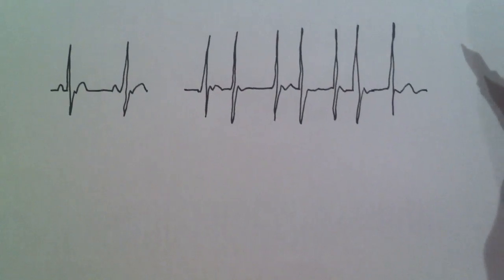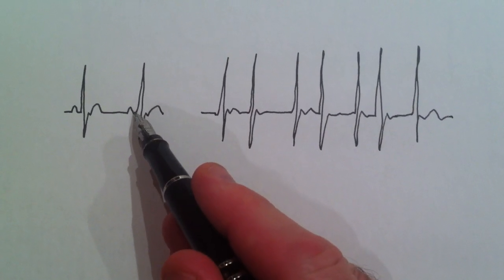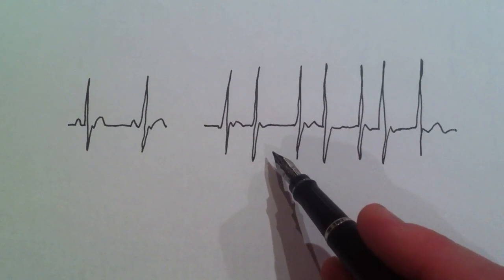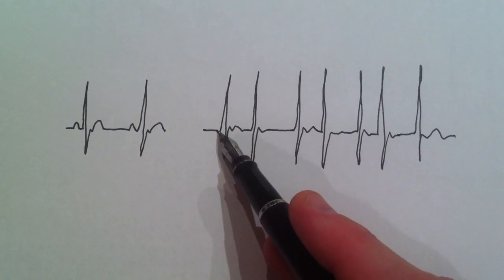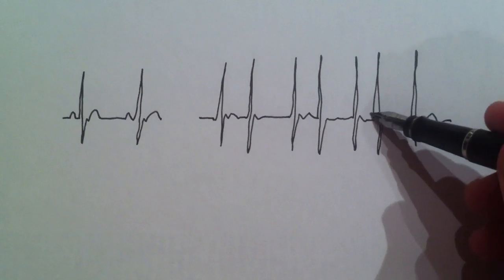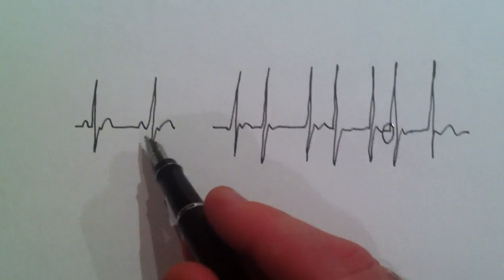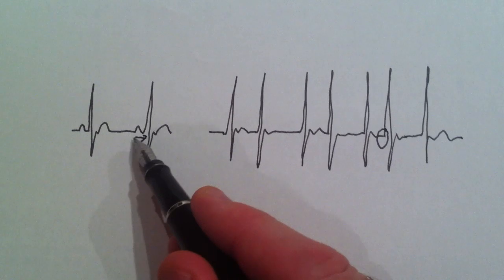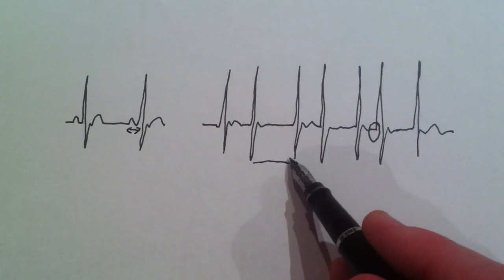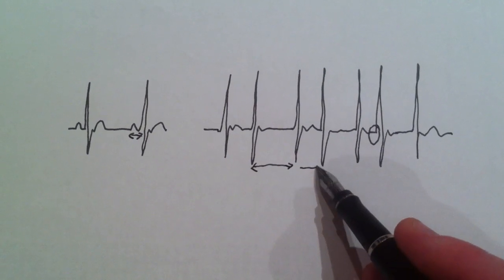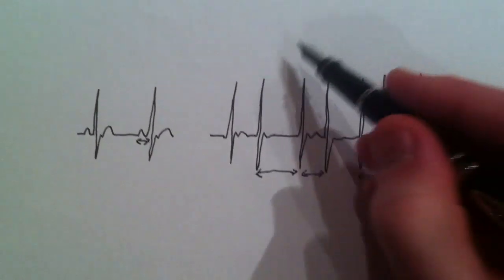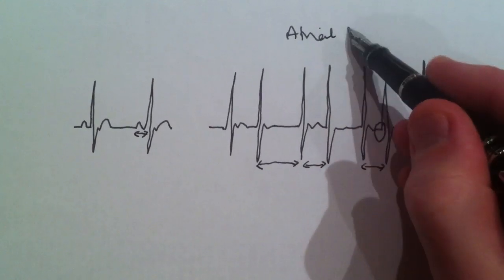The normal P-wave, seen before each normal pulse (the large amplitude deflection), is lost in each beat of atrial fibrillation. The absence of the P-wave at a set interval, and the totally random duration between each beat, are the hallmarks of atrial fibrillation.